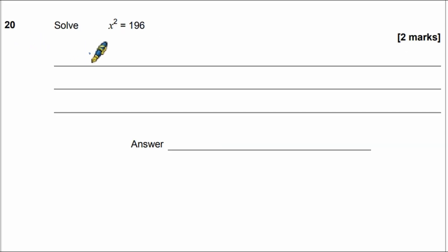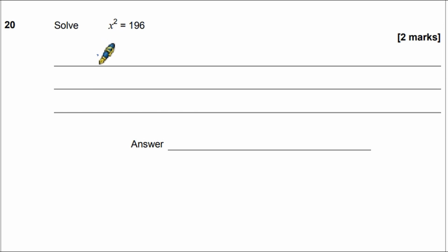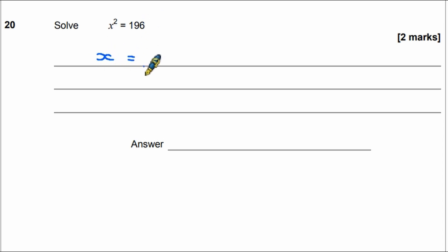Question 20: solve x² = 196. We find the square root of both sides. The square root of x² is x, and the square root of 196 is 14. So x = 14.